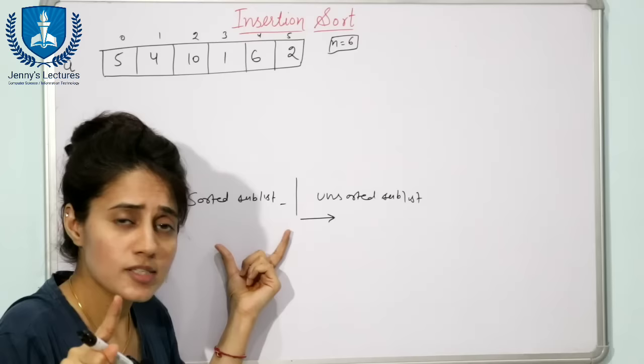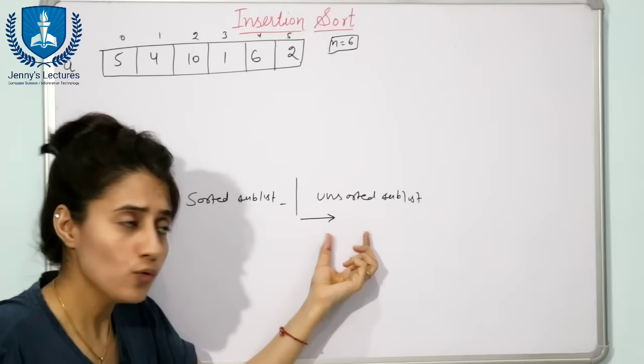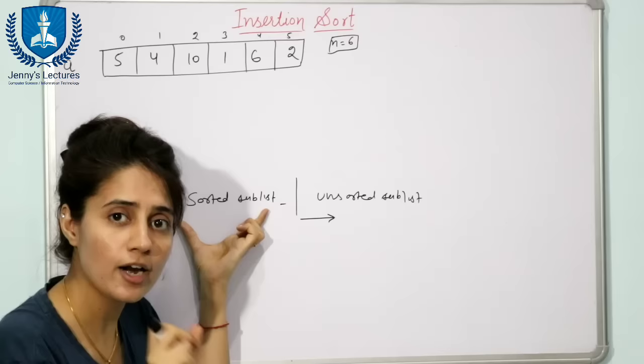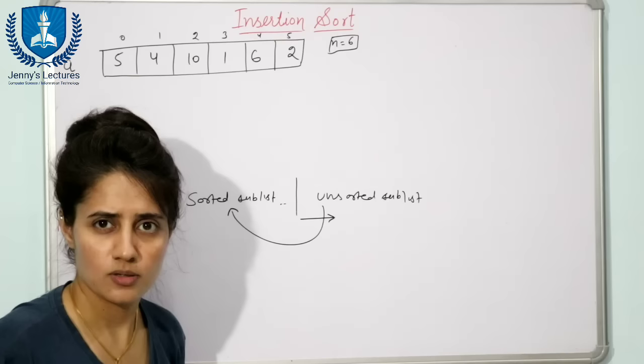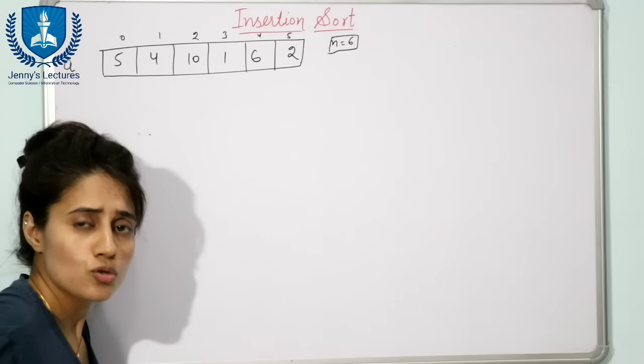It's not like we directly pick one value from the unsorted sublist and place it at the last of the sorted sublist. First, we pick one value from the unsorted sublist. Second, we find out the appropriate place for that value in the sorted sublist. Then we insert that value into the sorted sublist one by one.